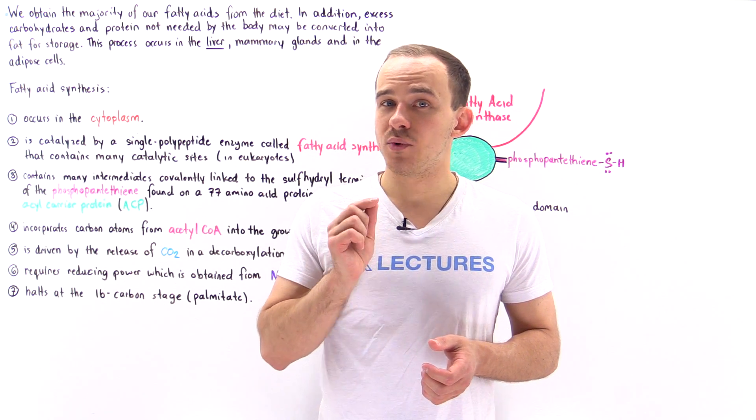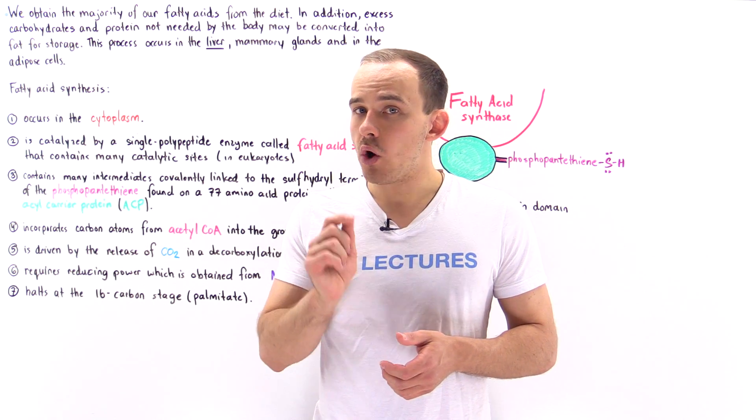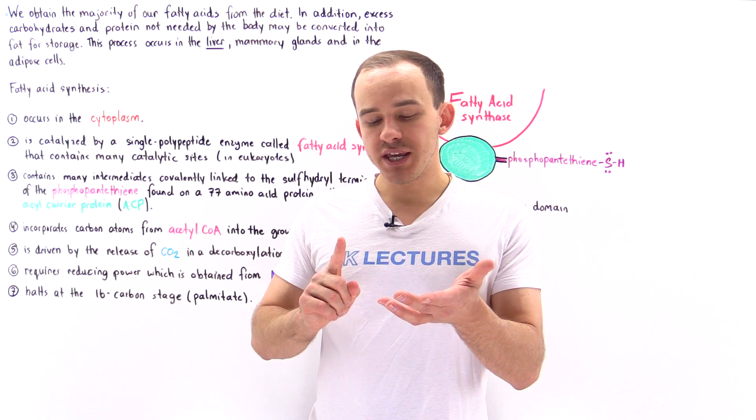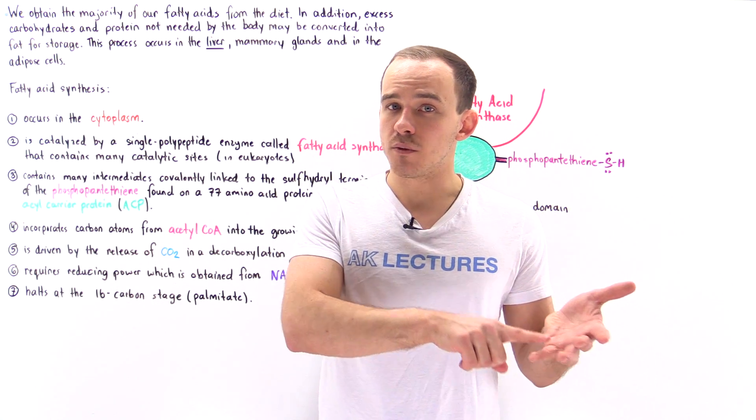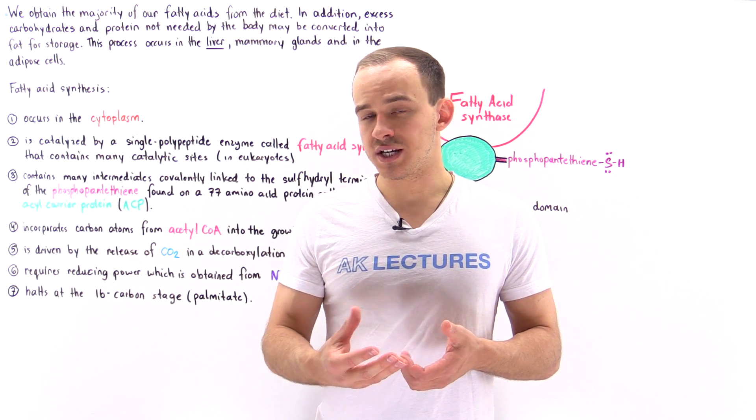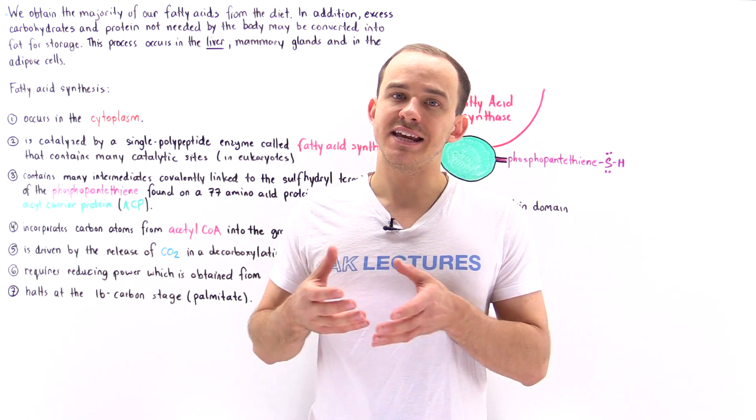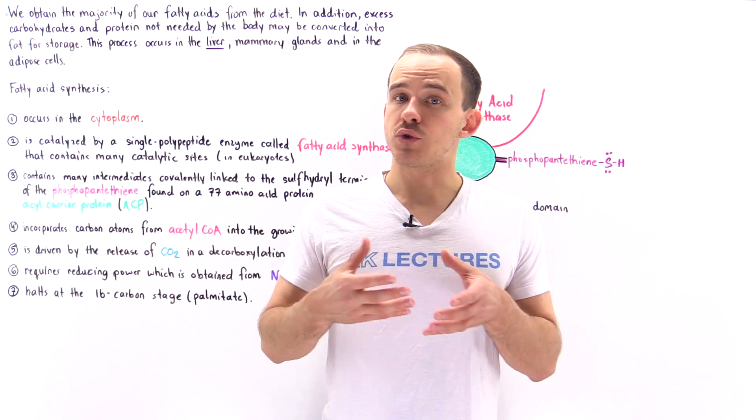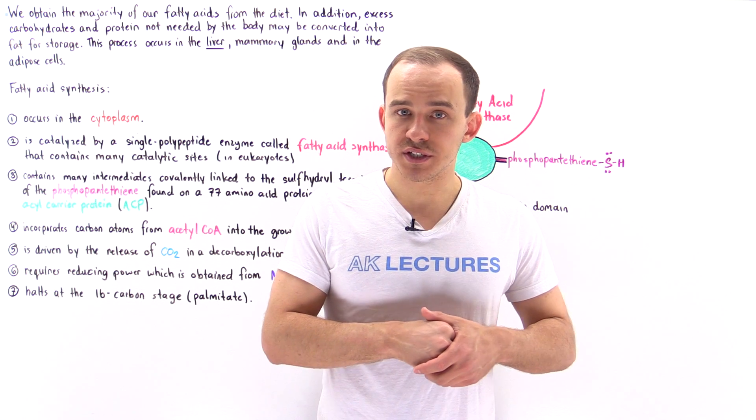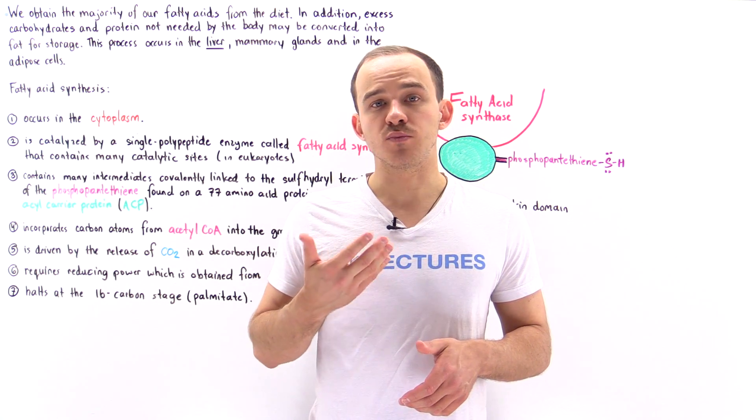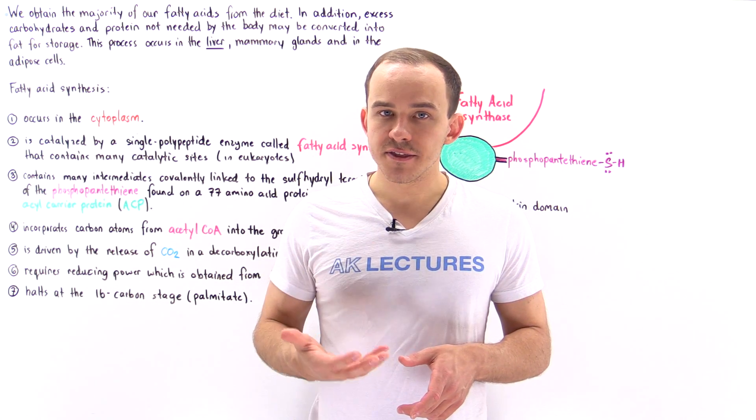In fact, this is exactly what happens when we eat one too many donuts. So if we eat excess carbohydrates or protein, these molecules can actually be transformed into fatty acids and then stored as triglycerides in our adipose tissue. This process is what we call fatty acid synthesis.